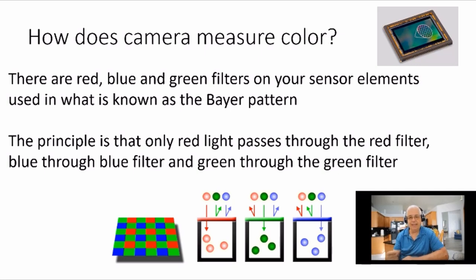And what this does is the filter only passes the color of the filter. So a red filter will only pass red light, and the amount of light measured is how much red light struck that sensor. The green filter only passes green light, so the reading from that sensor is how much green light struck the photosite. And then the blue filter only allows blue light through it, and that measurement is the measurement of the blue that came through that.